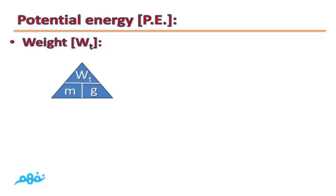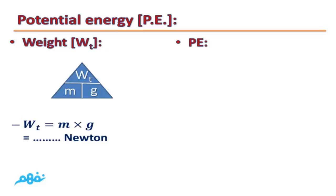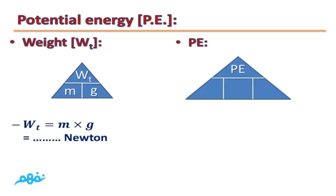Weight equals mass times gravitational acceleration, and its measuring unit is newton. Potential energy equals weight times height, and we can replace weight by mass times g. So potential energy equals mass times g times height — mass times gravitational acceleration times height.